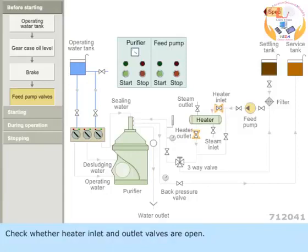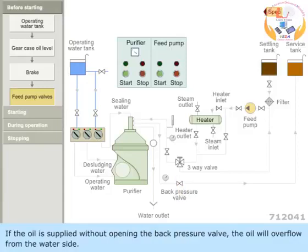Check whether the heater inlet and outlet valves are open. Open back pressure regulating valve at the outlet of the purifier. If the oil is supplied without opening the back pressure valve, the oil will overflow from the water side.